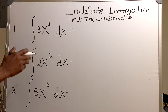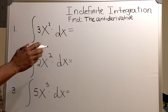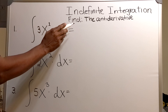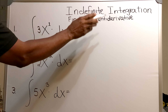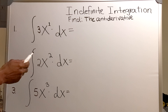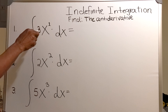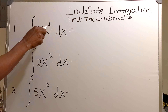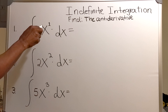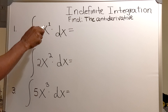In this video I'm going to be doing indefinite integration and I will be finding the antiderivative of the following functions. Now what do I mean by the antiderivative? For example, if I wanted to find the antiderivative of 3x to the first, I'm asking myself the question: what is 3x to the first a derivative of, and how do I find it?